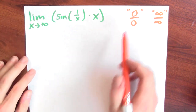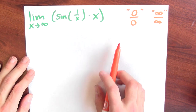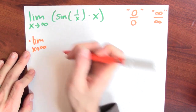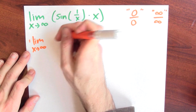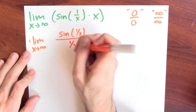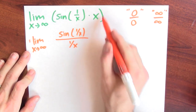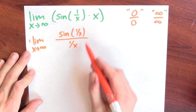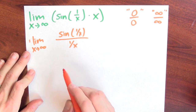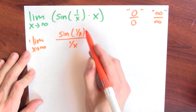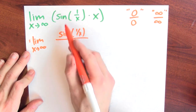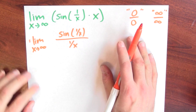But we can transform this problem into one of these situations. Instead of calculating this limit directly, I'll calculate the equivalent problem: the limit as x approaches infinity of sine(1/x) in the numerator divided by 1/x. Instead of multiplying by something going towards infinity, I divide by its reciprocal. The reciprocal of something going to infinity goes to 0, so now the numerator goes to 0 and the denominator goes to 0 — this is now amenable to L'Hôpital's rule.